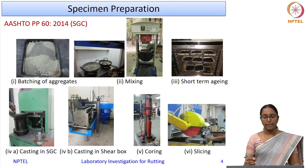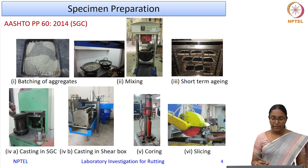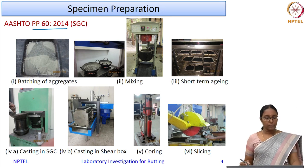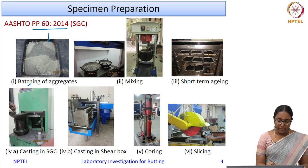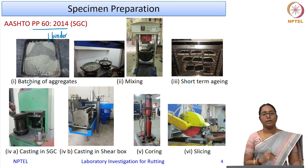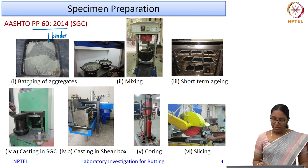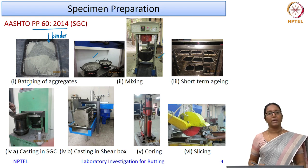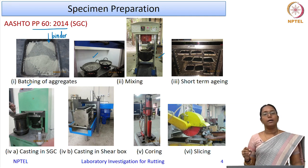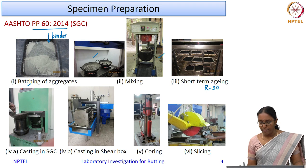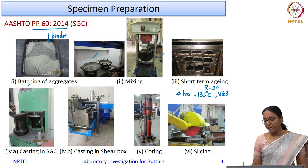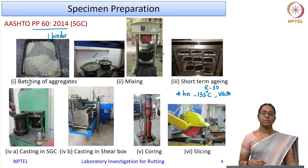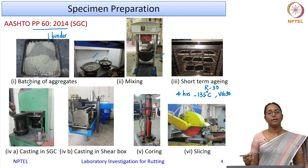For both tests, the specimen is a cylinder of 100 mm diameter and 150 mm height, prepared as per AASHTO protocol PP60. You batch the aggregates as per the required gradation, choose the binder content based on mix design, and mix aggregates and binder either manually or in a mechanical mixer. Then short-term aging of the prepared mix is performed as per AASHTO R30—conditioning for 4 hours at 135°C for an unmodified binder such as VG30. For a modified binder, the conditioning temperature follows the manufacturer's recommendations.